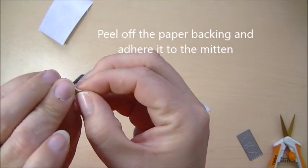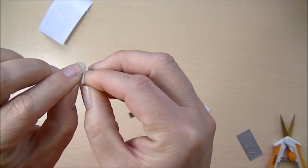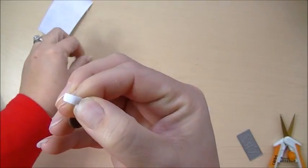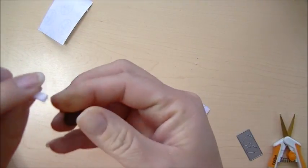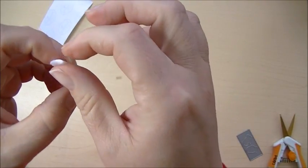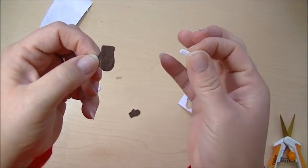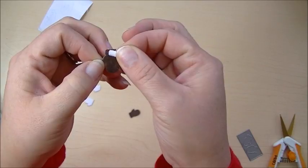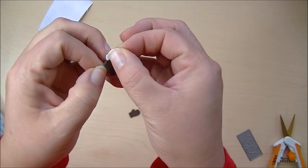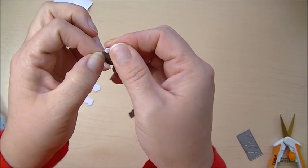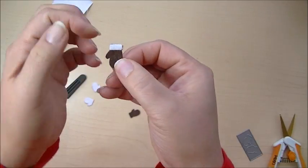And because we put this backing on first, all I have to do is peel that off. And this little section is actually a sticker, which makes it much easier to work with. So I'm just going to take this one, and here's my little brown mitten. And I'm just going to lay it right over the top to make our little cuff, just like that.